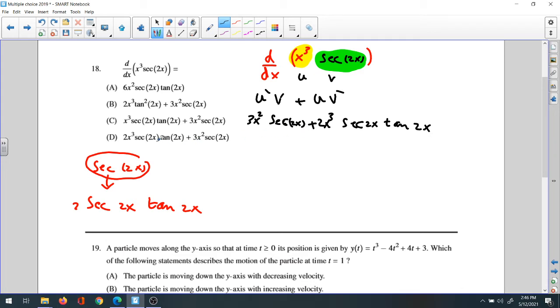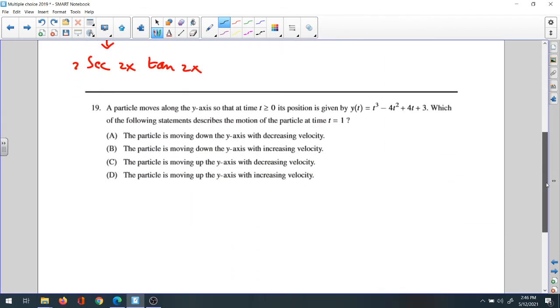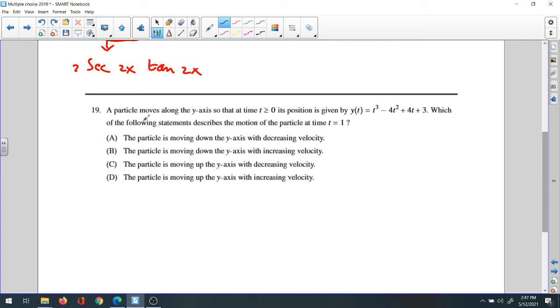Question 19: A particle moves along the y-axis. Its position is given by y(t) = t³ - 4t² + 4t + 3. Position could be expressed as x(t), y(t), z(t), or s(t). The question asks about the motion of the particle at time t = 1. We want to find if the particle is moving down or up, decreasing or increasing.